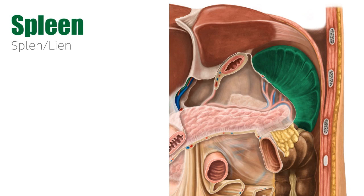So what is exactly the spleen and what does it do? It is the largest immunological organ of your body and measures about 12 centimeters in length, weighing approximately 150 grams. However, this weight may vary from individual to individual. The spleen is a highly vascularized organ and is purple in color.